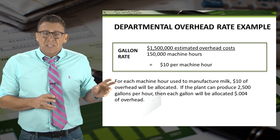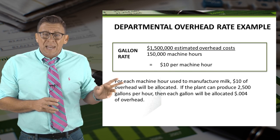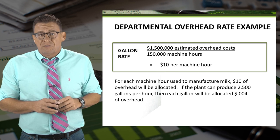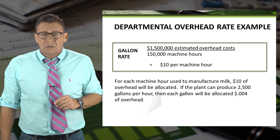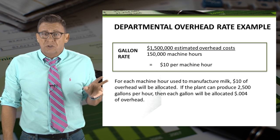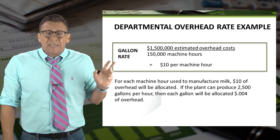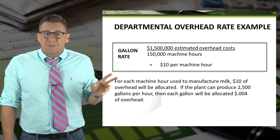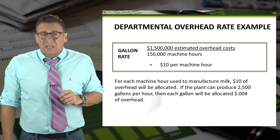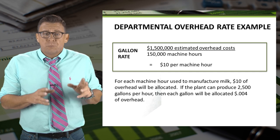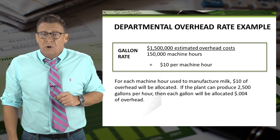The gallons will be allocated $10 of overhead per machine hour. For each machine hour used to manufacture milk, $10 of overhead will be allocated. If the plant can produce 2,500 gallons per hour, then each gallon will be allocated $0.004 of overhead.